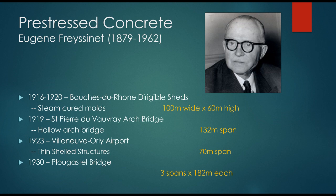Some of Freycinet's major innovations include the durable dirigible sheds from 1916 to 1920, which used steam-cured molds — developing techniques for hardening concrete over time. He then produced hollow sections with the Saint-Pierre-de-Vauvray arch bridge in 1919, followed by the Villanave-d'Ornon airport in 1923, introducing thin shell structures. All of this happened over the course of about seven years, advancing the field in leaps and bounds.